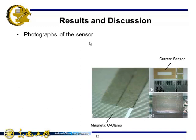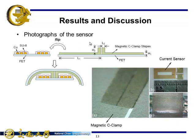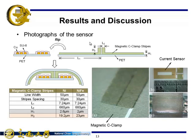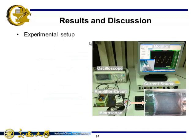Here shows the photograph of the sensor: the current sensor and the magnetic C-clamp stripes. The current sensor is formed by flipping and attaching the magnetic C-clamp stripes on the current sensor tape, as the illustration shows. The thickness of the clamp is about 20 microns high.